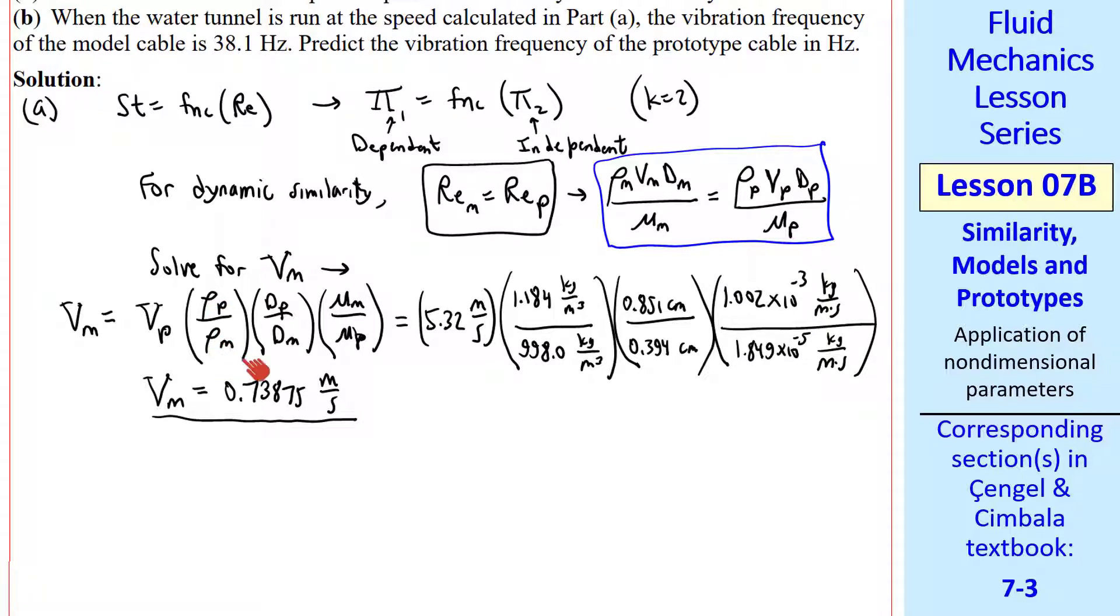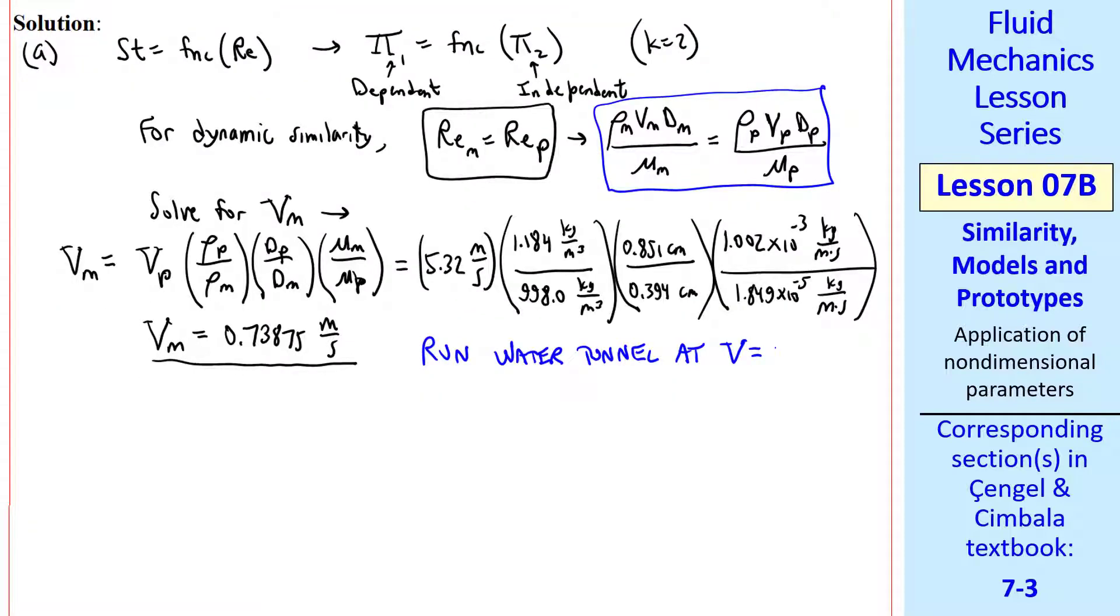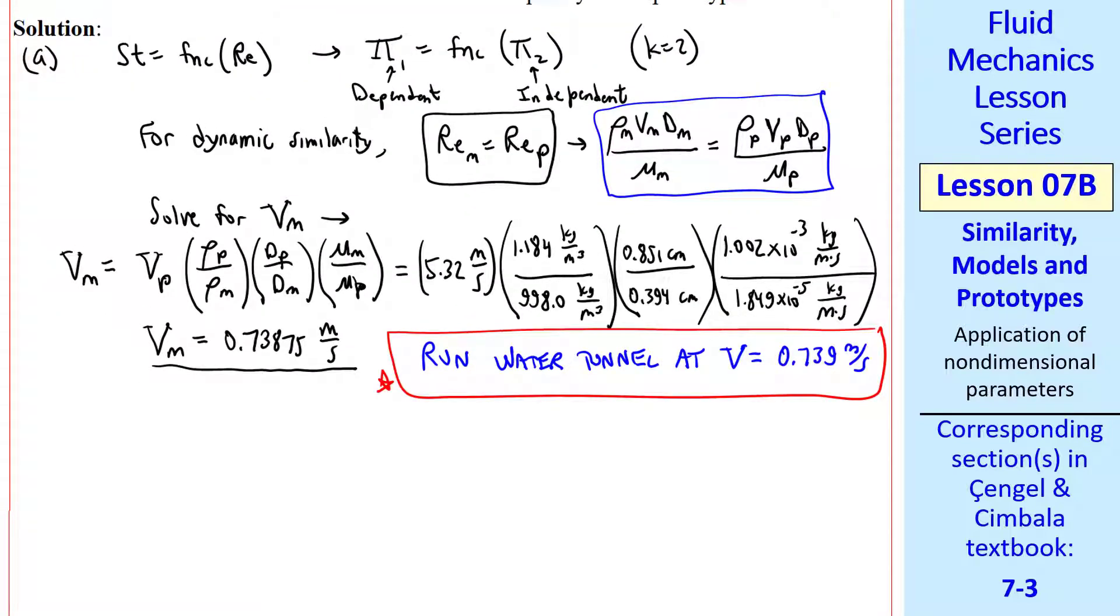I comment why we wrote these as ratios. It's because you can immediately see that the dimensions all cancel numerator and denominator. We did not even have to convert diameters from centimeter to meter, as long as both are in the same units. So we need to run the water tunnel at 0.739 meters per second to achieve dynamic similarity between the model and the prototype.